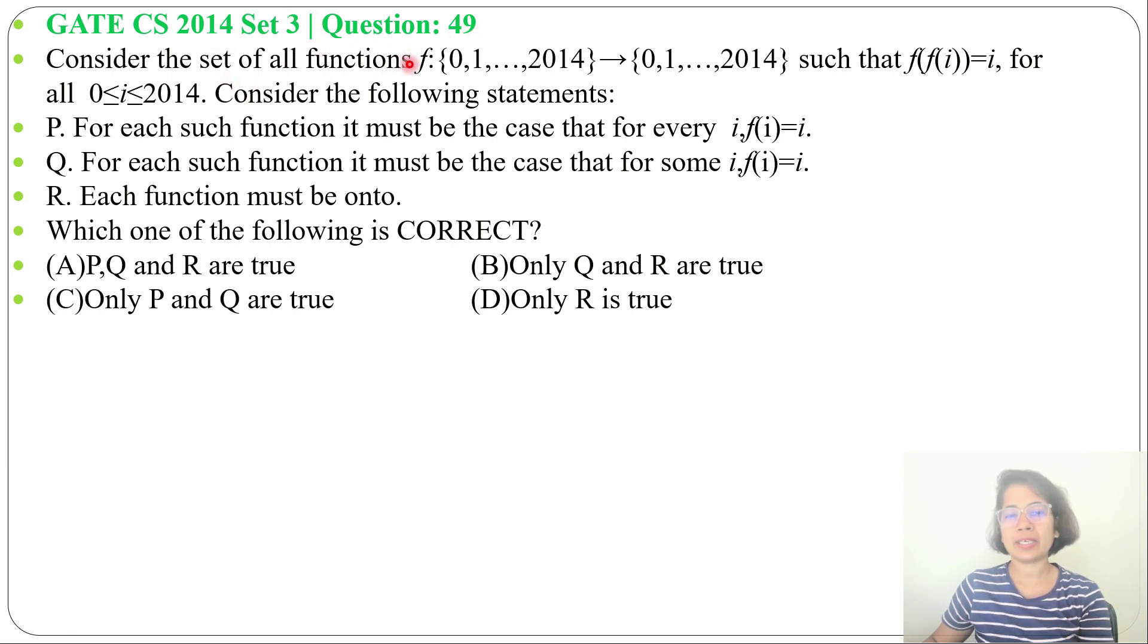Consider the set of all functions f:{0,1,...,2014} → {0,1,...,2014} such that f(f(i)) = i for all 0 ≤ i ≤ 2014. Consider the following statements: three statements are given, which one of the following is correct and four options are given.